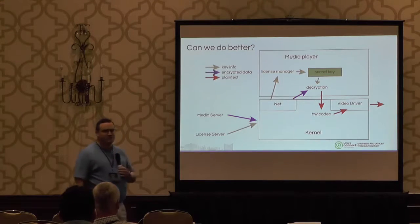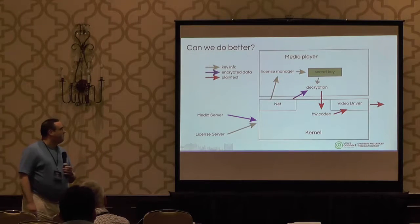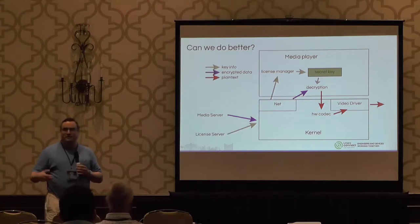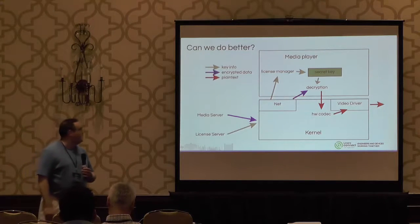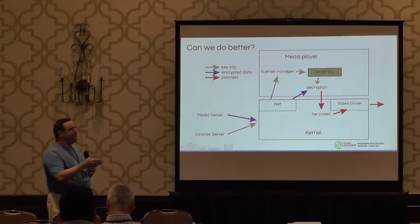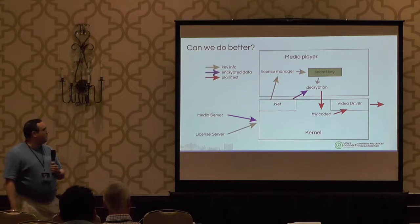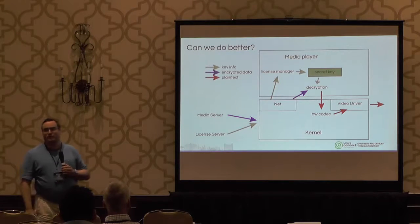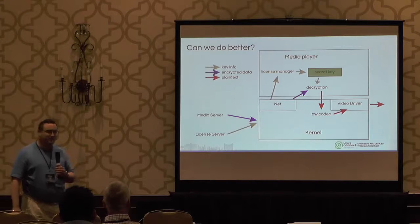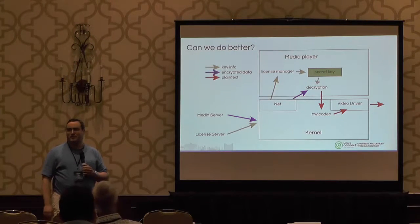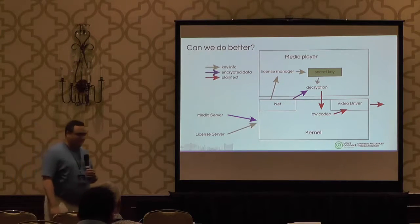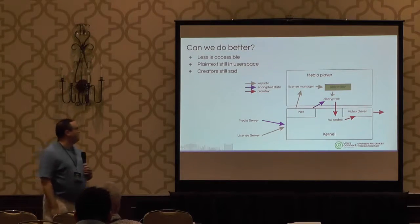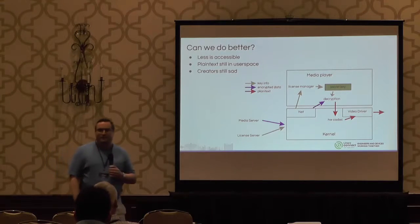Can we do better? This next diagram looks very similar to the last one. The main difference is that we've pushed the decompression of the video into a hardware decoder. The video is decrypted in user space but sent to this piece of hardware, which then decodes and plays it back. The reason this is better is there's a lot less plain text video available to access. It's not that much better though — plain text is still in user space and we don't get HD video.